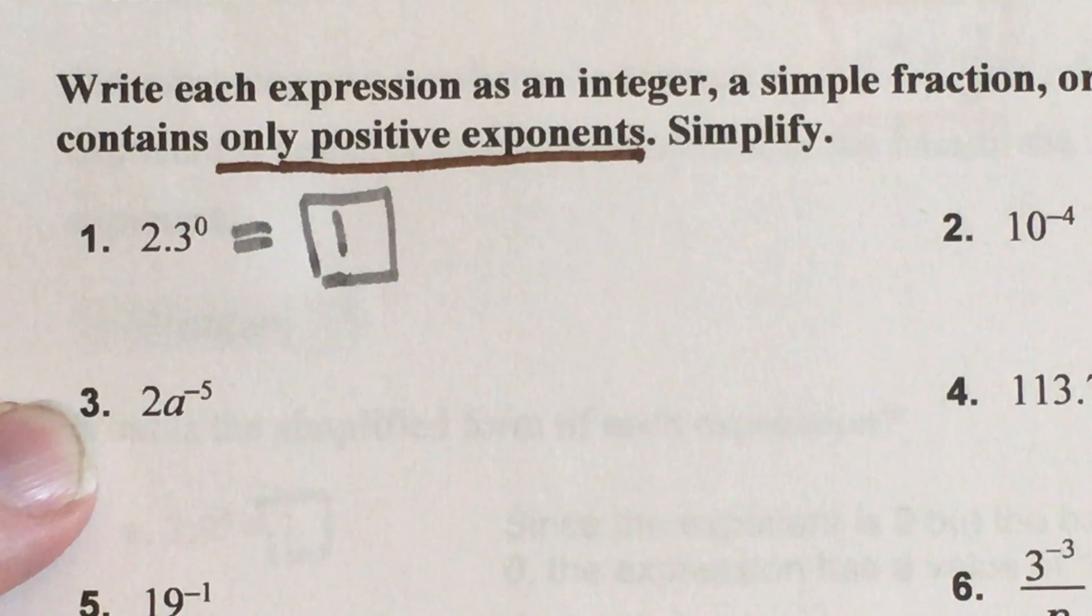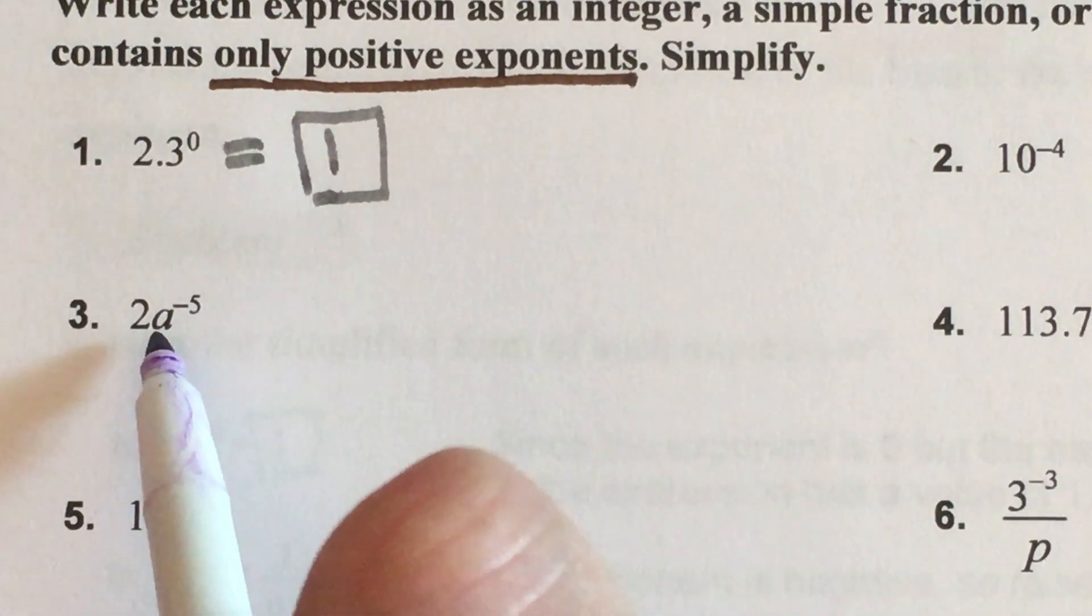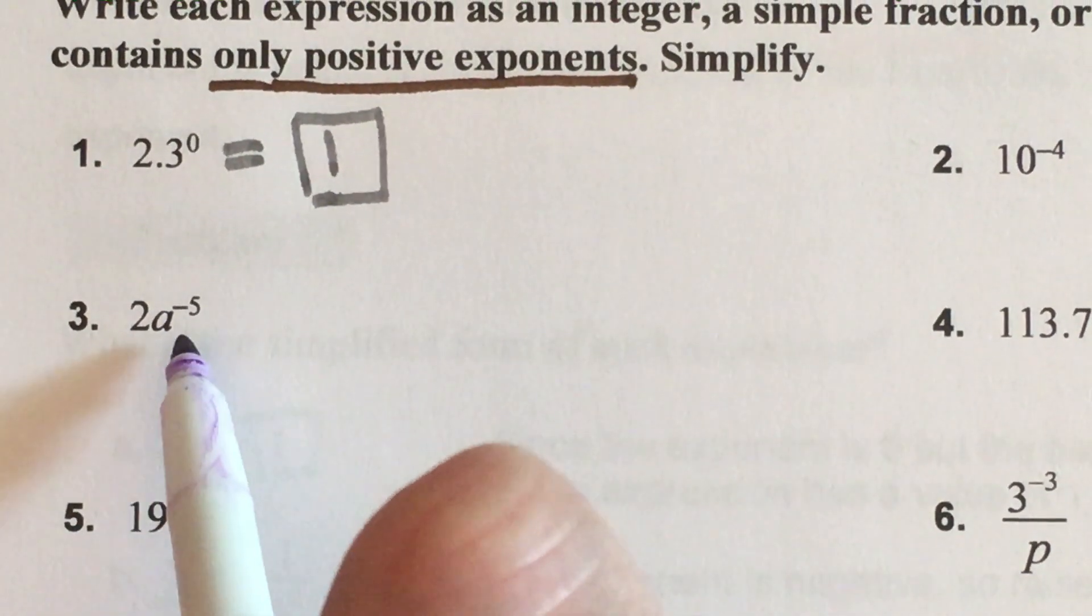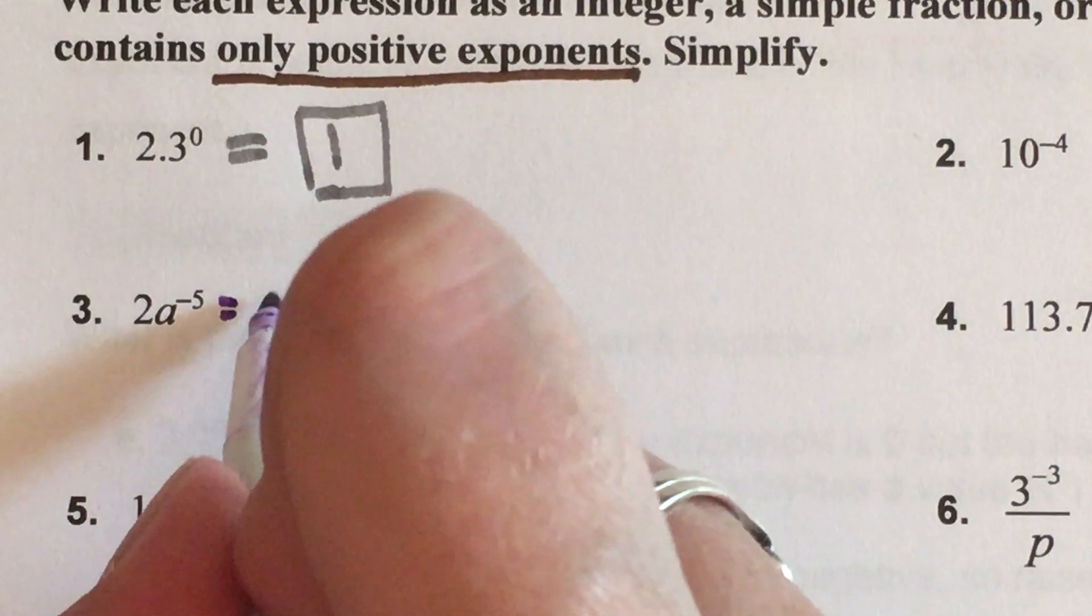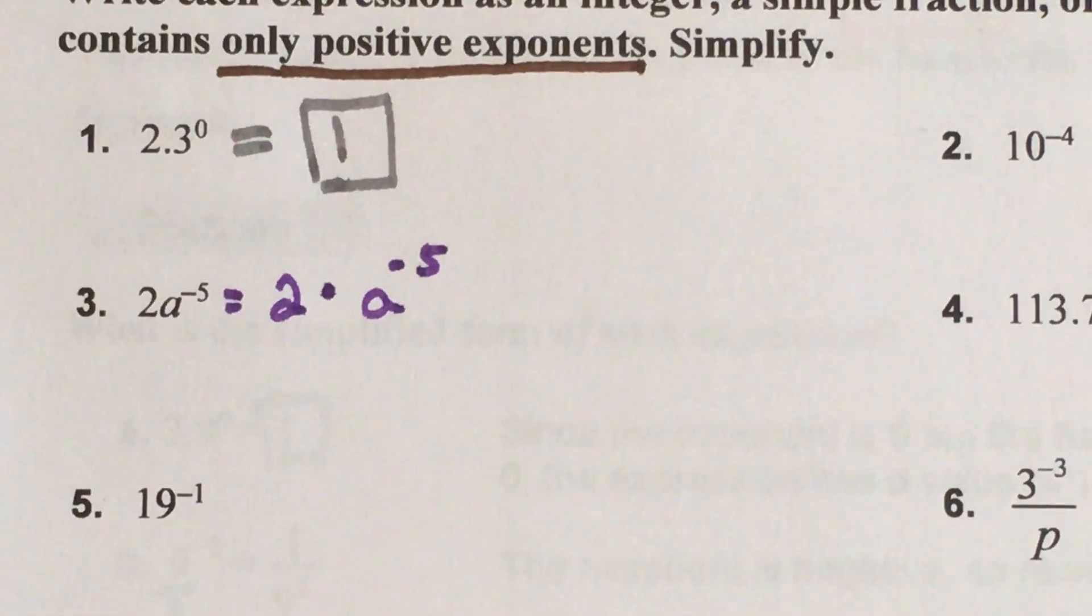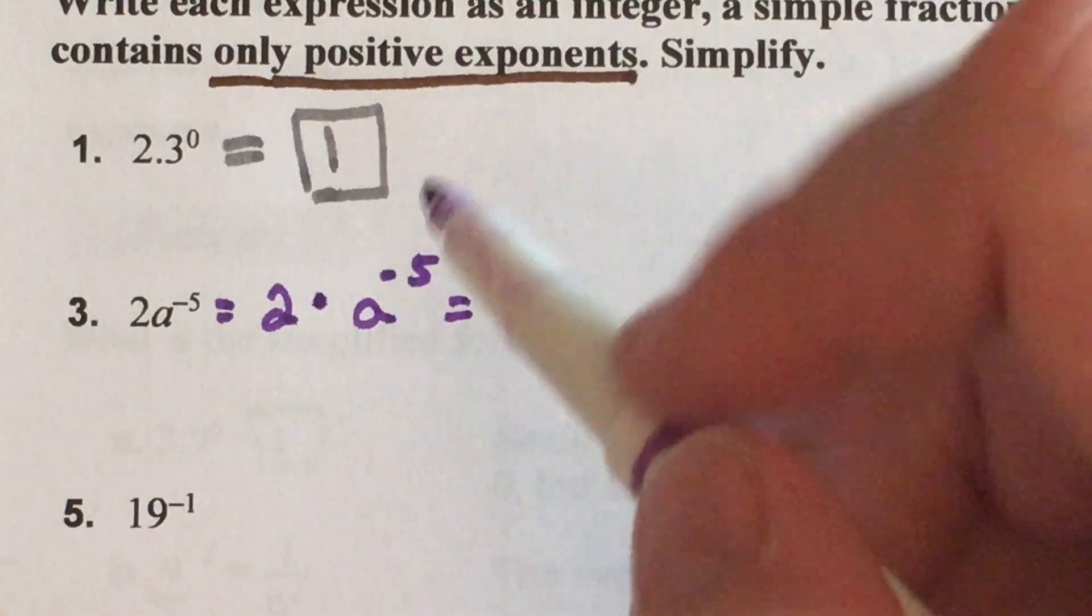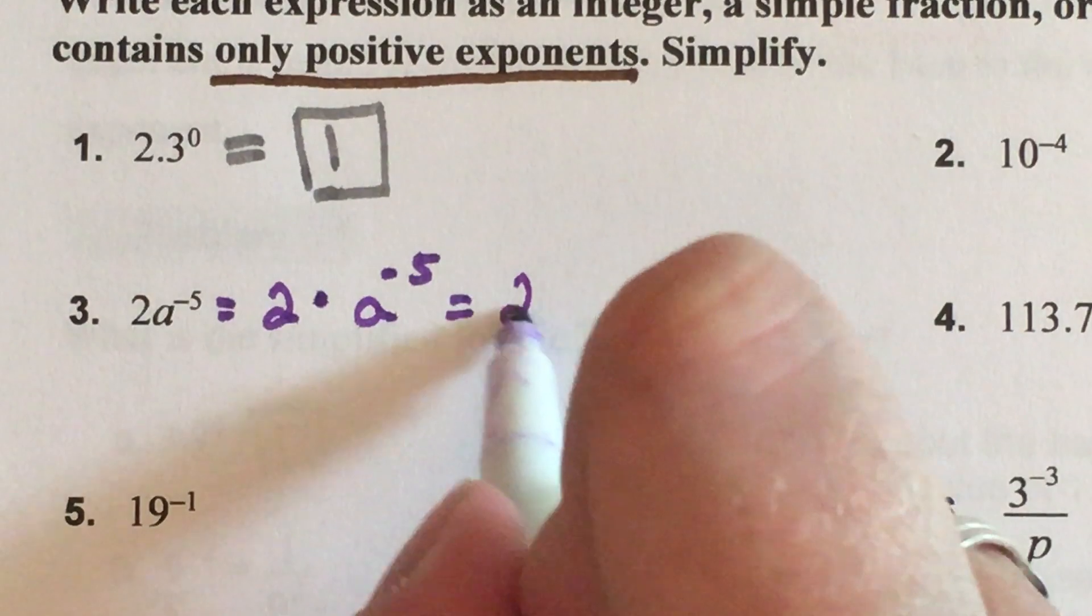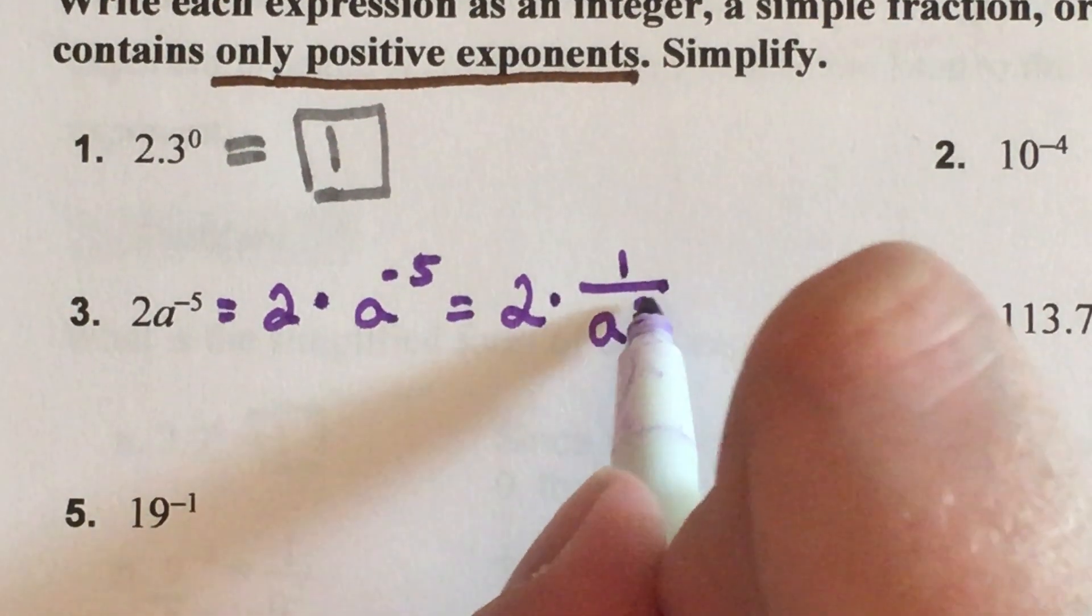Number three. Here I don't have any parentheses. The only piece that has the exponent of a negative 5 is the a. So let's separate this: this is 2 times a to the negative 5 just so I can see it. Now let's say okay, negative exponent, let's make that a positive exponent. This becomes 2 times 1 over a to the fifth power.